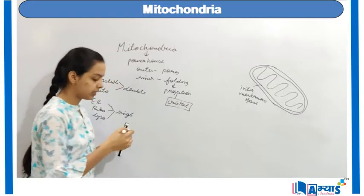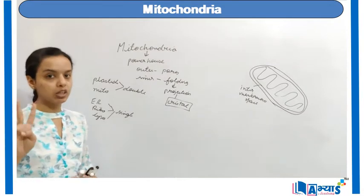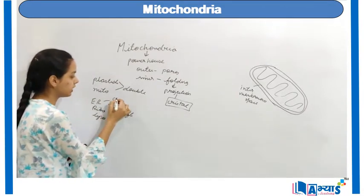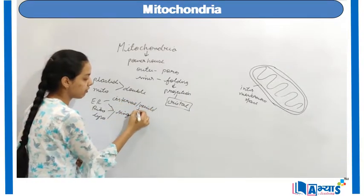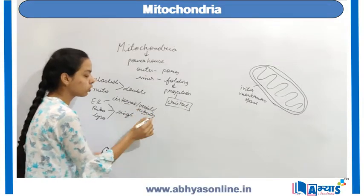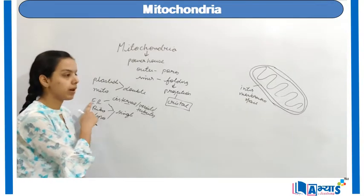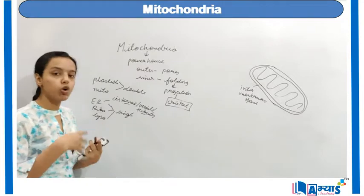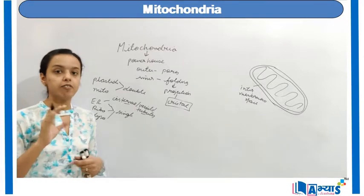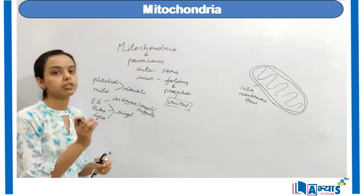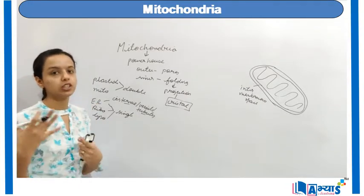Each organelle has a definite structure of its own. For example, the endoplasmic reticulum has three important structures: cisternae, vesicles, and tubules. Similarly, there are different structures for Golgi bodies and ribosomes. All these organelles have a specific structure, and because of that structure they have a specific function to perform — function depends on structure.